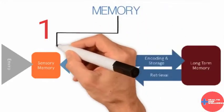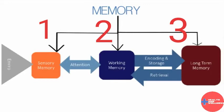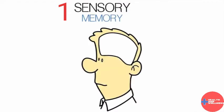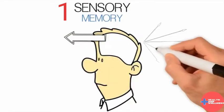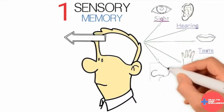Memory can be thought of as having three critical components. Sensory memory takes information from the environment through the human senses: sight, hearing, touch, taste, and smell.